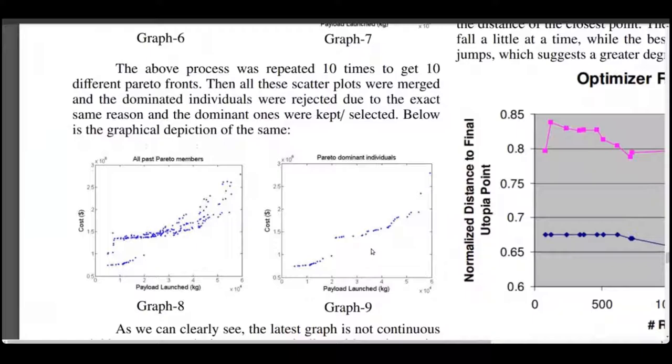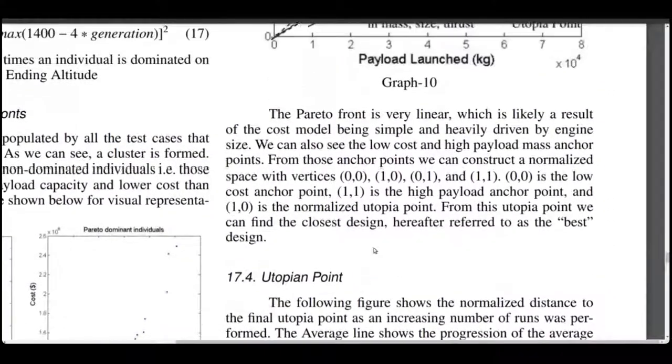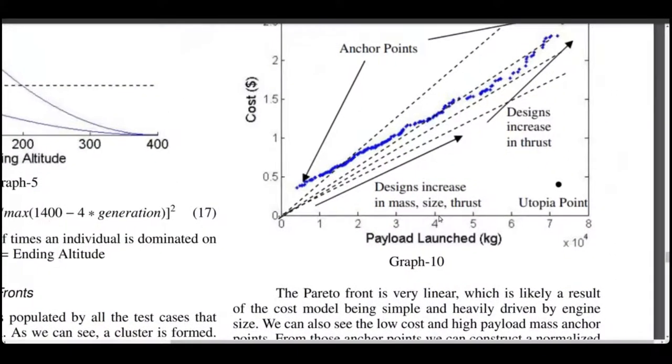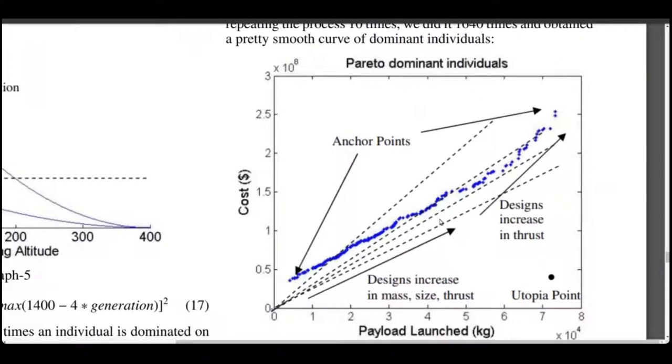So, in order to obtain a smooth curve, the process was repeated more times, i.e., for 1640 iterations instead of just 10 times. As you can see, there is a pretty smooth curve which can get even smoother on increasing the iteration count.